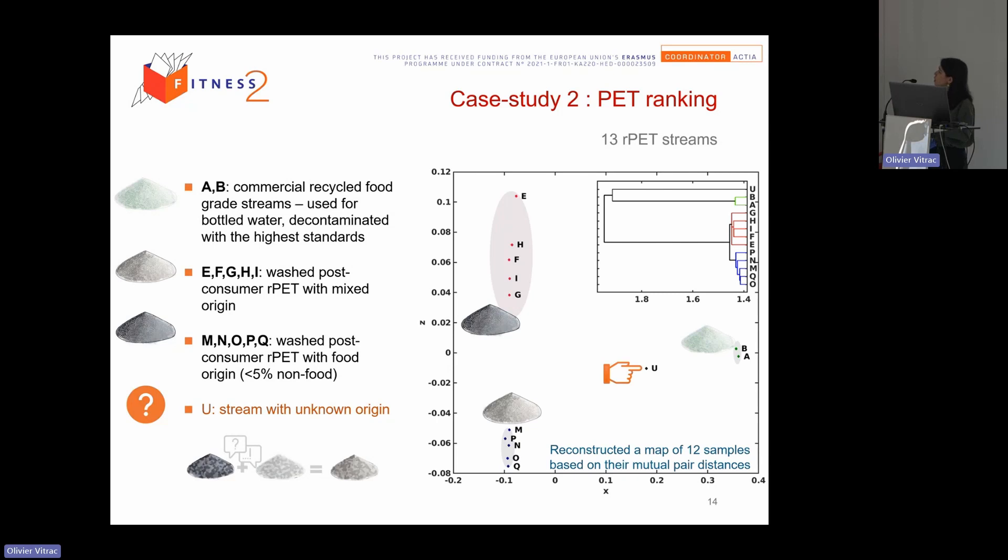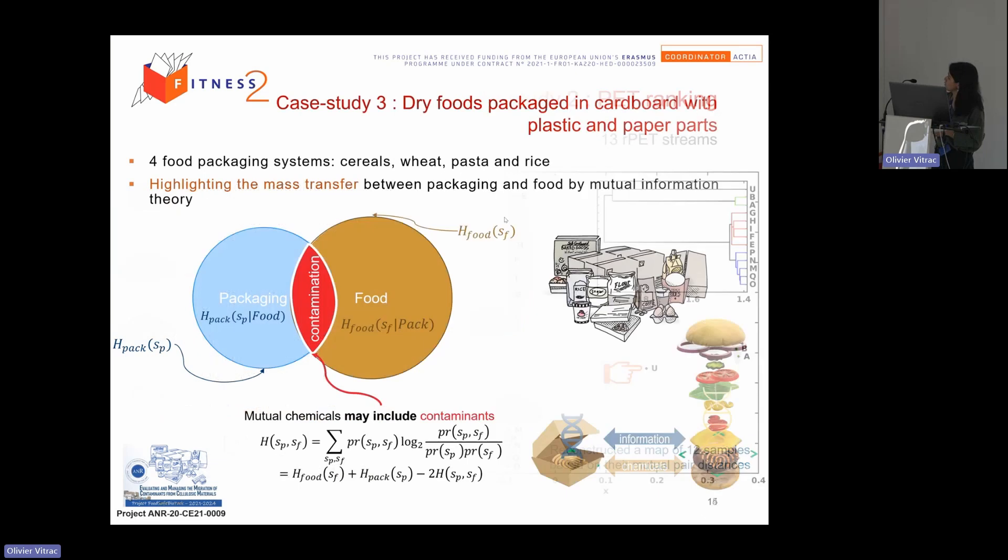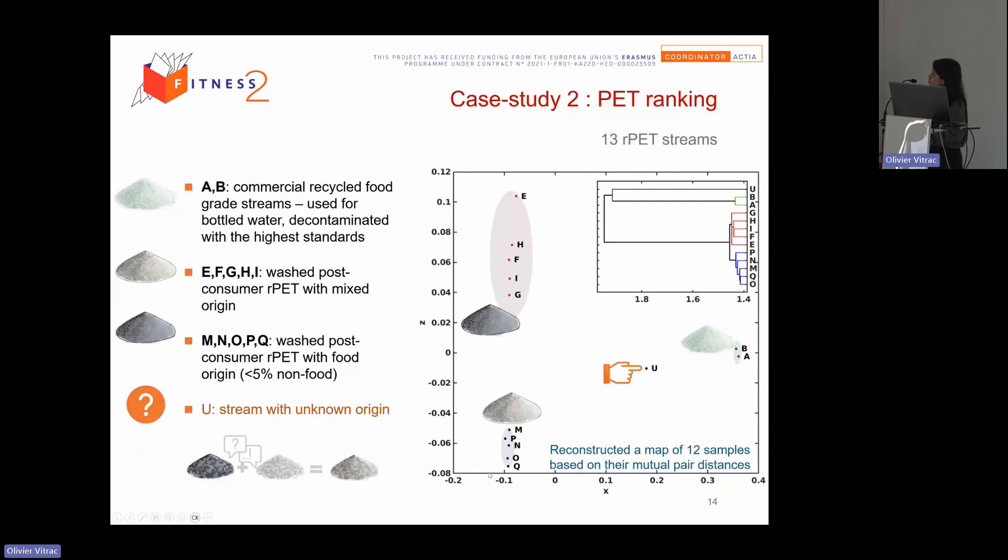And this one is a little interesting. We would like to rank or to compare the PET with unknown PET among all the things. So we have here two commercial recycling food grade PET, decontaminated with the previous standard. Here we have five post-consumer PET with mixed origin, mixed origin without decontaminated. And here we have five others, washed post-consumer PET with food origin. And it's the same thing. We project the distance between different chromatograms. And here we have unknown sample. And we need to know if unknown sample is close to what group of samples.